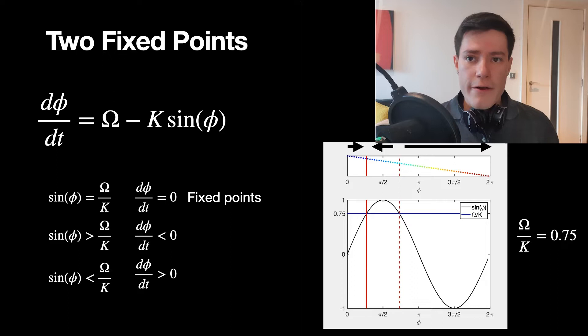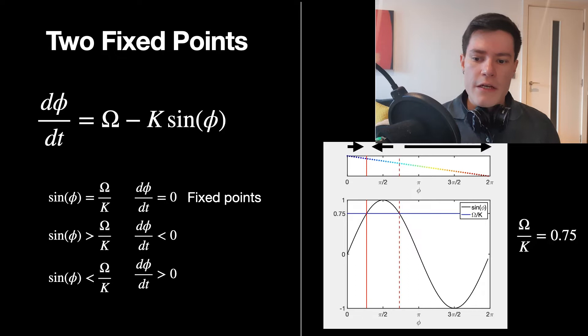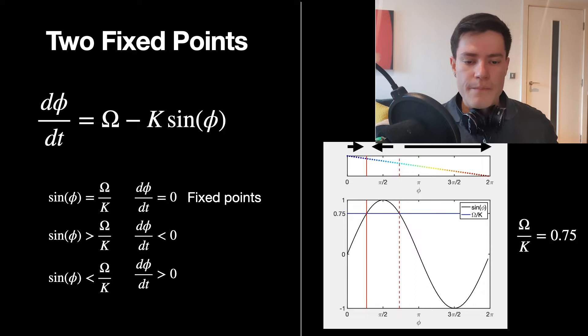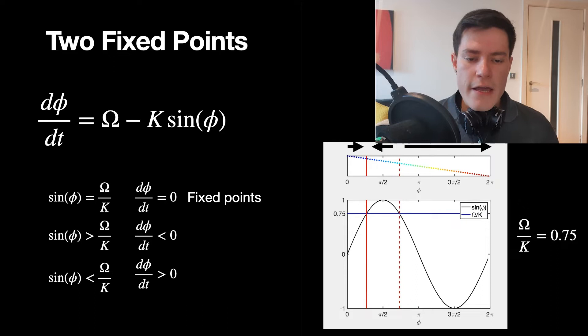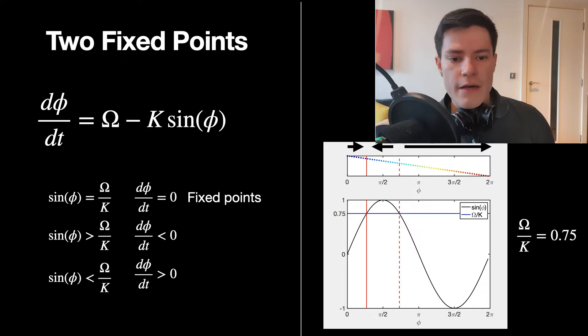Looking at the intersection of the horizontal line and the sine function: when sine phi is bigger than big omega over K, d phi / dt is less than zero, so the phase difference decreases (moves left). When sine phi is less than big omega over K, d phi / dt is greater than zero, so the phase difference increases (moves right). Between zero and the leftmost fixed point, sine is smaller than big omega over K, so phi moves right. Between the two fixed points, sine is bigger, so phi moves left. Past the second fixed point, the horizontal line is bigger again, so phi moves right.